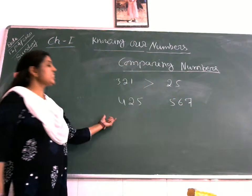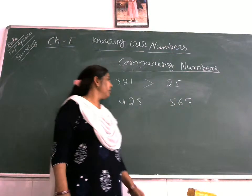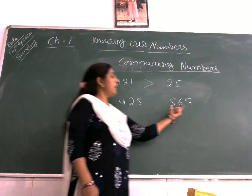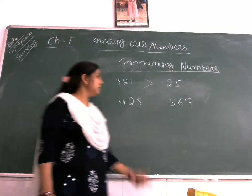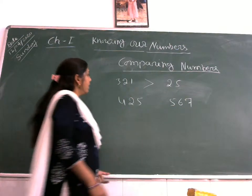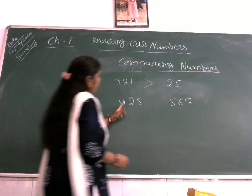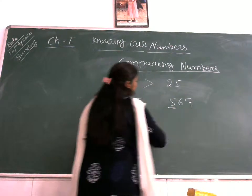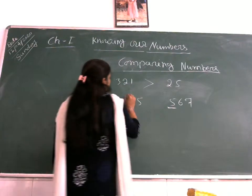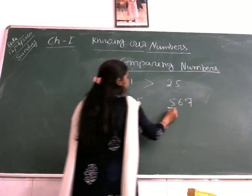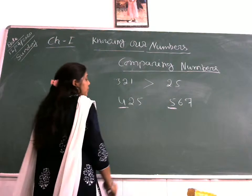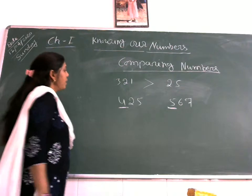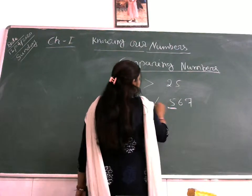Now when both sides have an equal number of digits — here is a 3-digit number and here is also a 3-digit number — we start comparing from the left side, the 1st digit. Here is 4 and here is 5, so which one is greater? Definitely 5 is greater, so that number is greater.